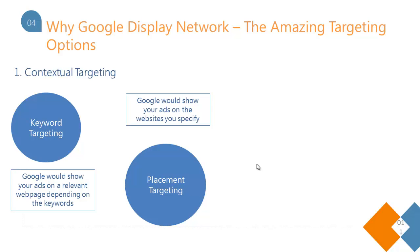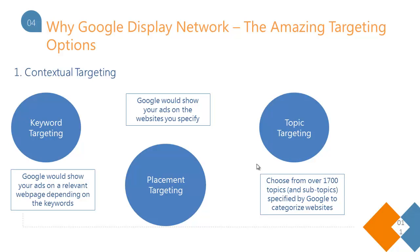The second type of targeting is placement targeting. You can type in the specific names of websites and Google will show your ads on those websites only. For example, if I want my webinar ad to show on sites like Search Engine Journal or Mashable, I can just put those website names in and Google would show my ads there.